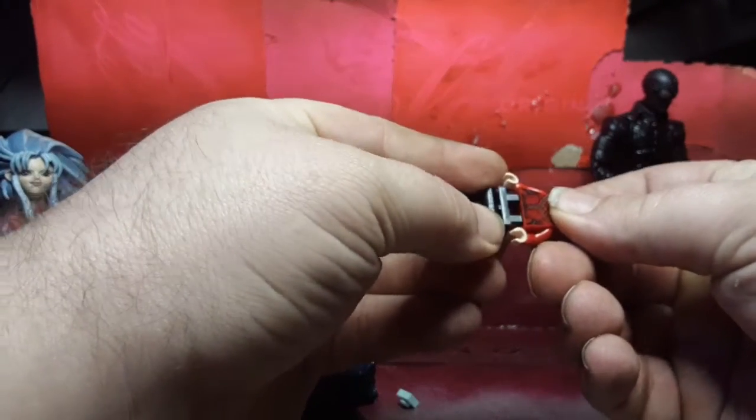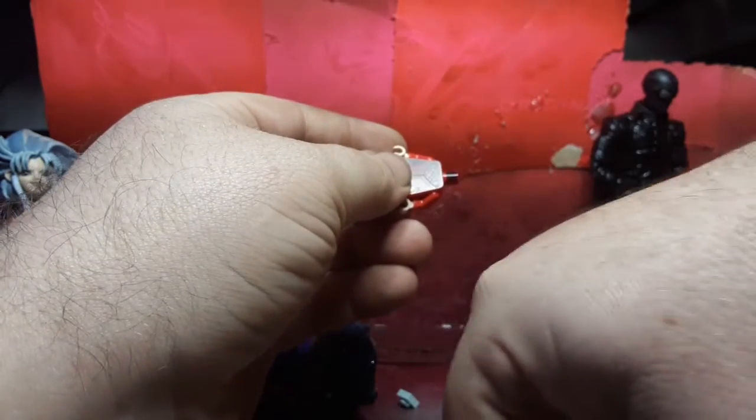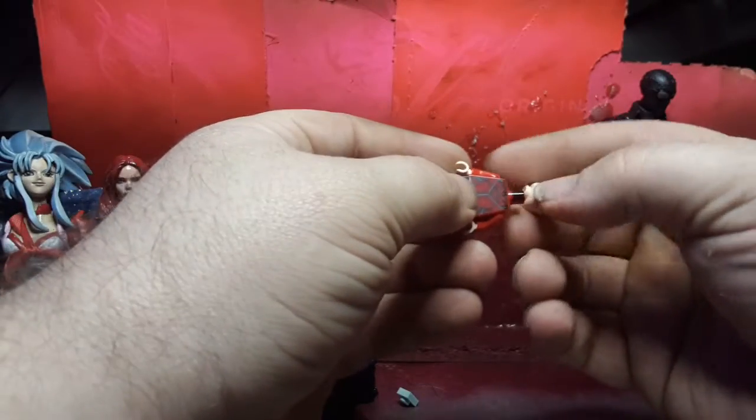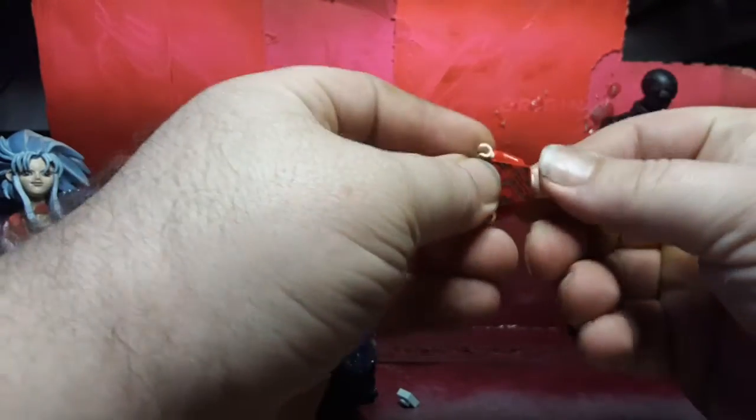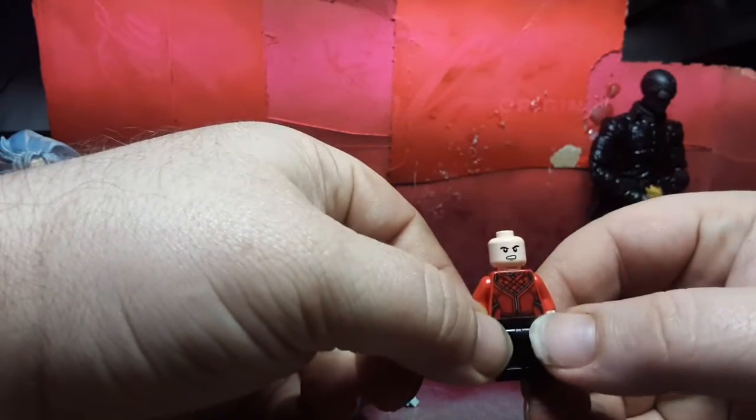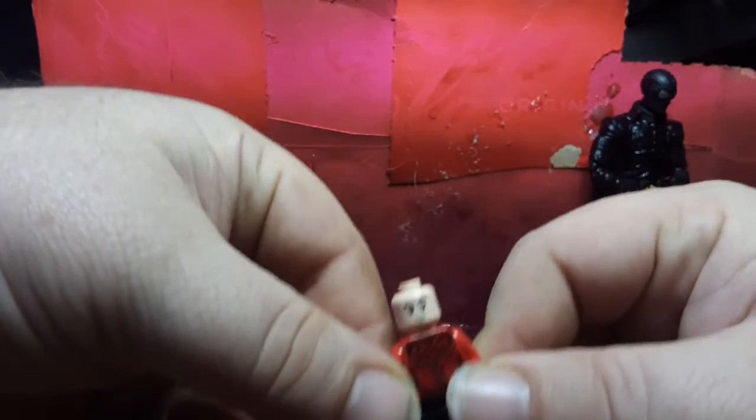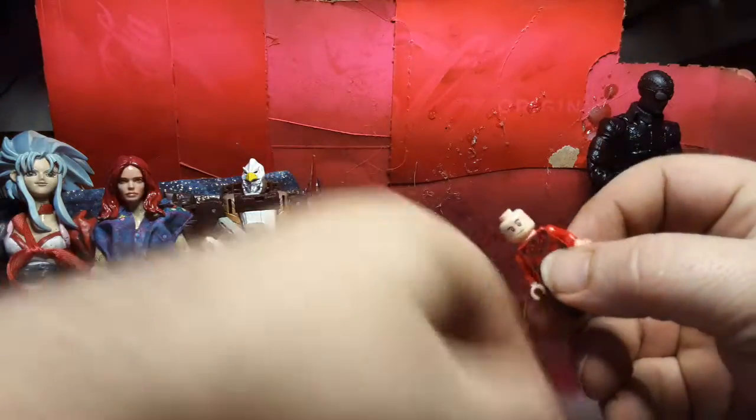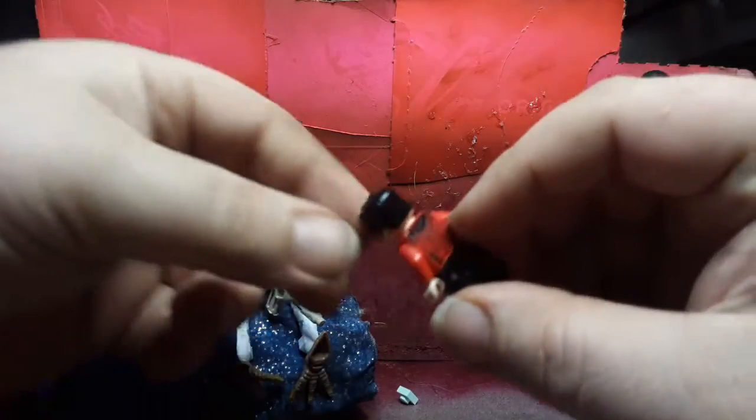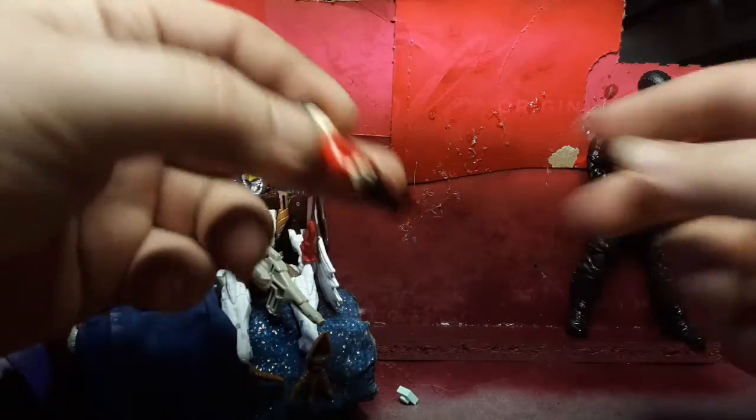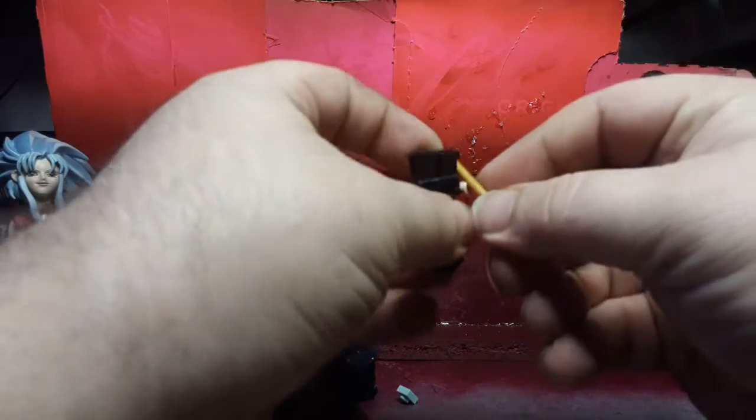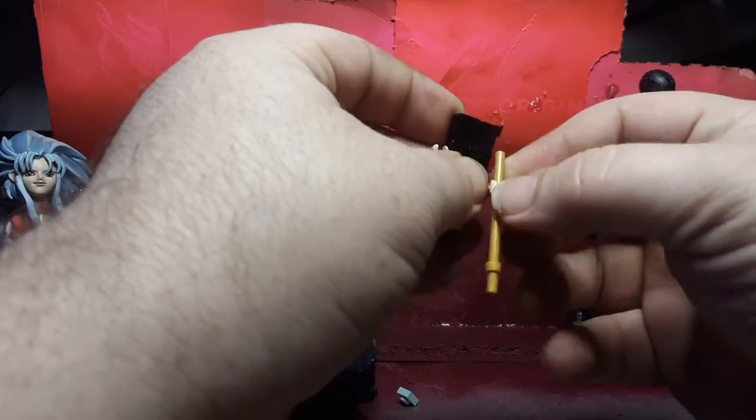We've got the legs. We've got the torso. We've got the head. Oh, he's got two expressions. He's got a mean, angry look and he's got a thoughtful, kind of relaxed look. We can put his nice hairpiece on. I like that hairpiece. That's a cool looking hairpiece. And we'll give him his fighting staff.